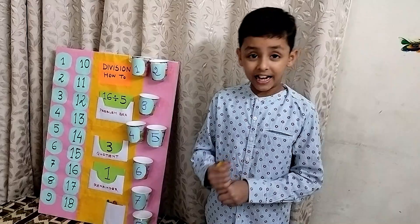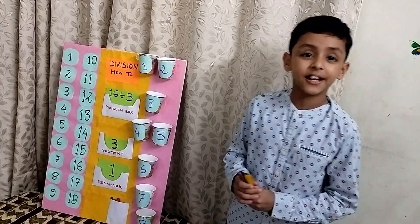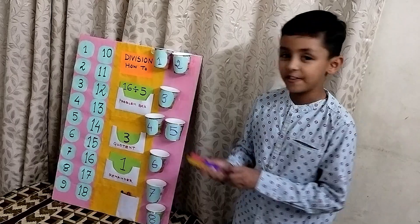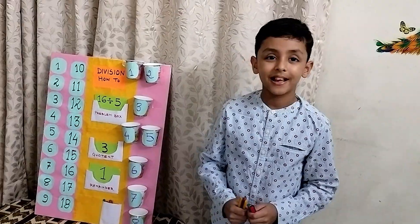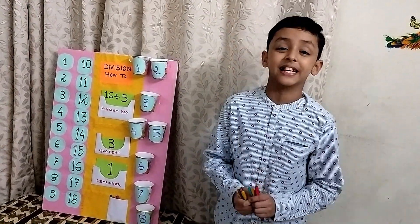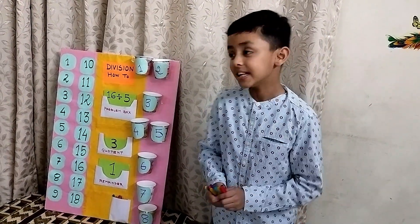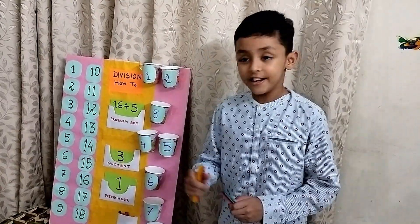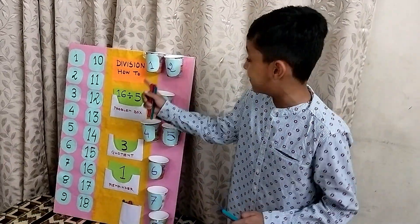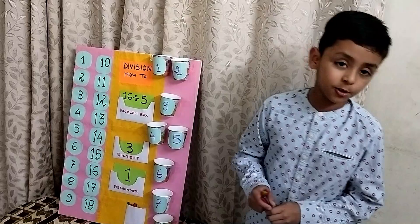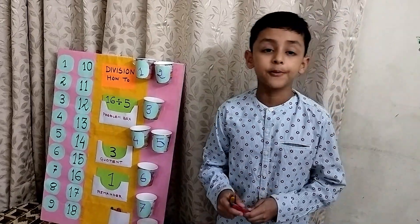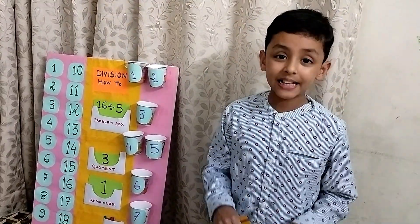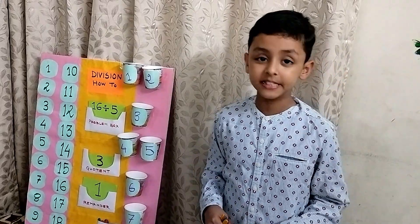I am going to show you the problem of 16 divided by 5. I need 16 sticks because the dividend is 16. Now the divisor is 5, so I have to put 5 sticks in each cup. Let's see how many cups I can fill with only 5 sticks.